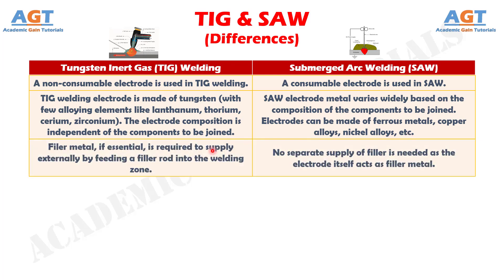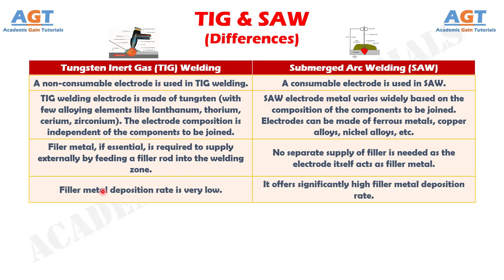Number 3: filler metal, if essential, is required to be supplied externally by feeding a filler rod into the welding zone in TIG welding, whereas no separate supply of filler is needed as the electrode itself acts as filler metal in submerged arc welding. Number 4: filler metal deposition rate is very low in TIG welding, whereas submerged arc welding offers a significantly high filler metal deposition rate.